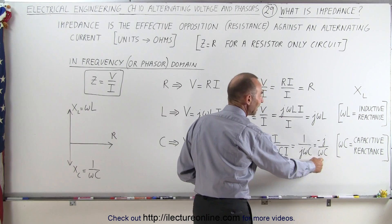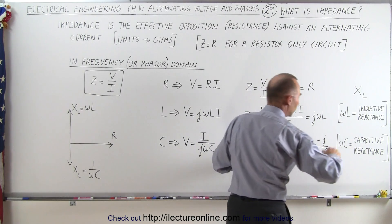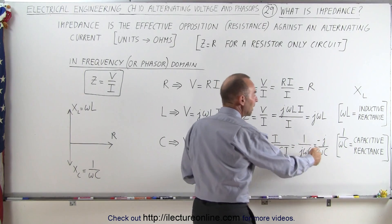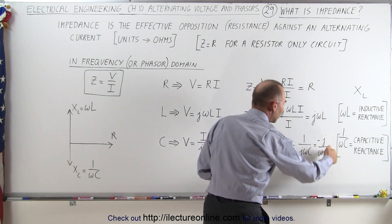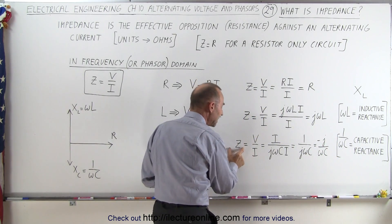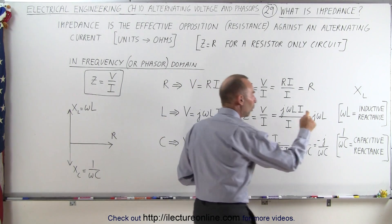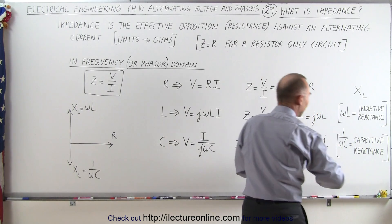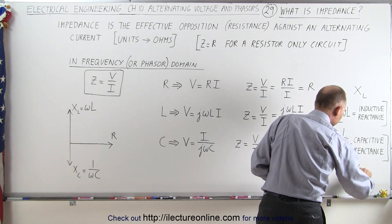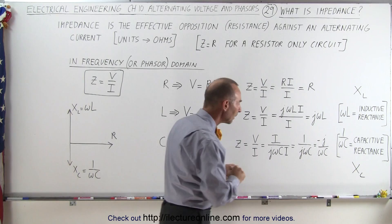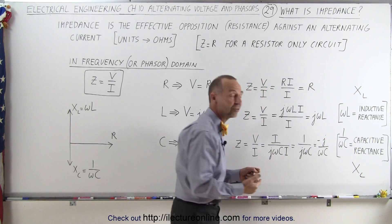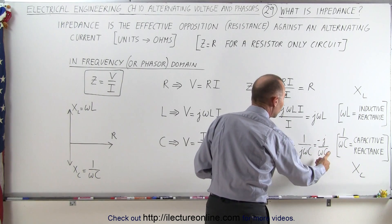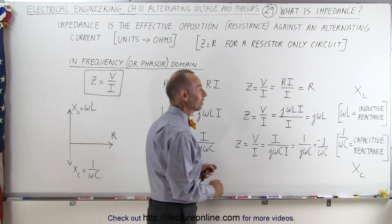Notice that 1 over omega C is the magnitude of the impedance for a capacitor, so 1 over omega C equals the capacitive reactance, written as X sub C. And minus j means there's a lag of 90 degrees — the voltage lags the current by 90 degrees in a capacitor circuit.